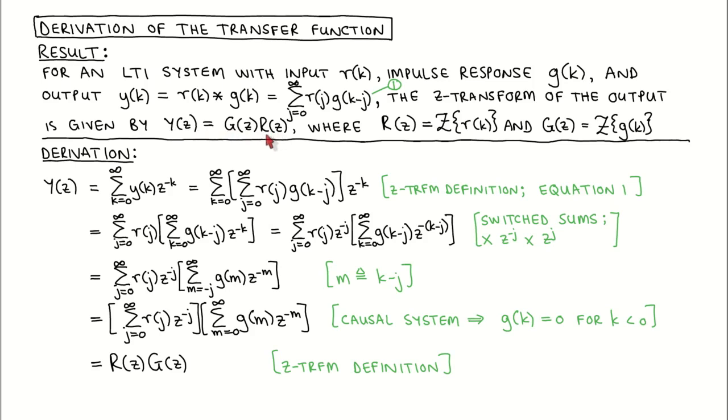The idea of the derivation is that we apply the definition of the Z-transform to the convolution sum, which we call equation 1, and then manipulate things until we can recognize the Z-transforms of the input and the impulse response.